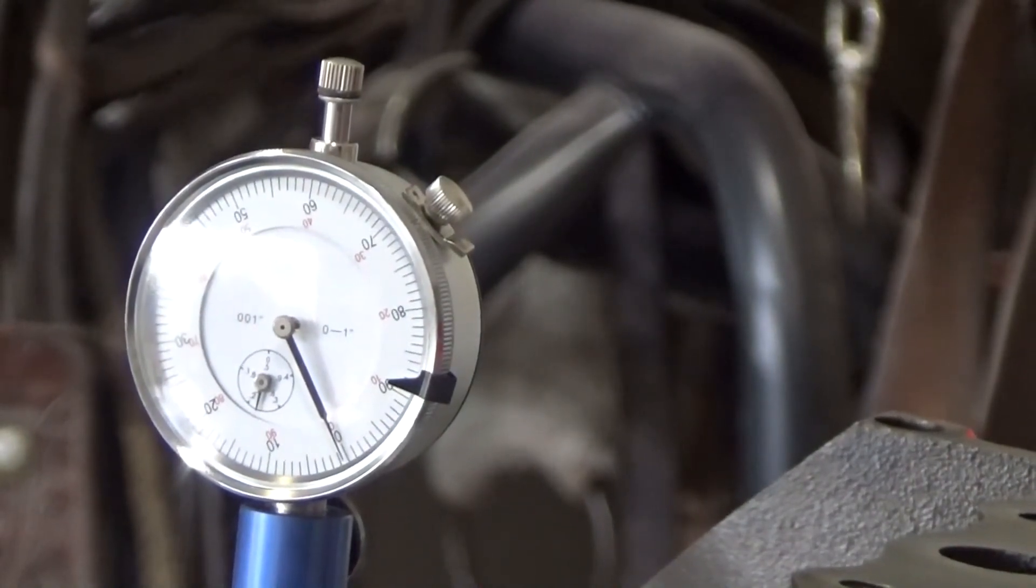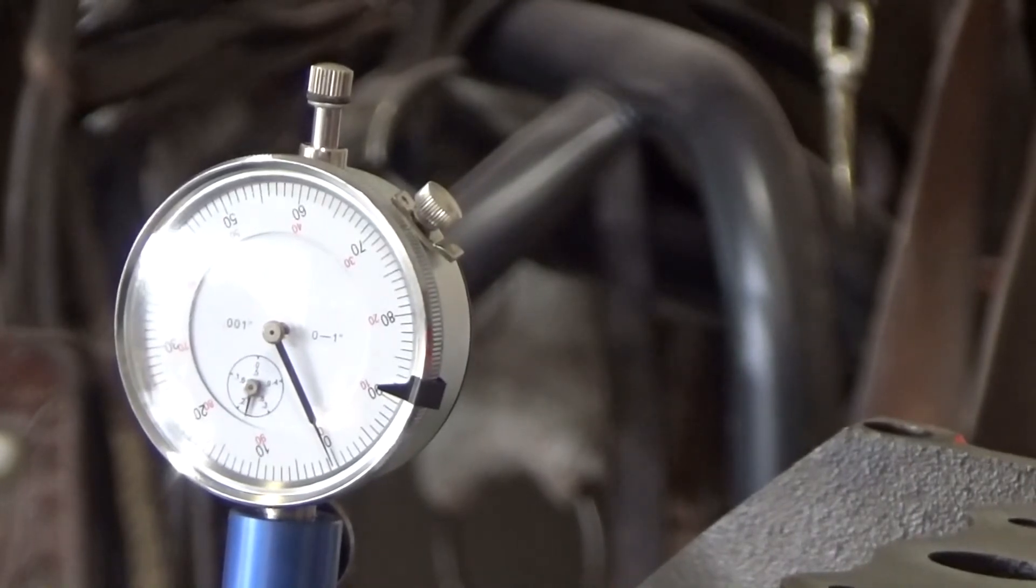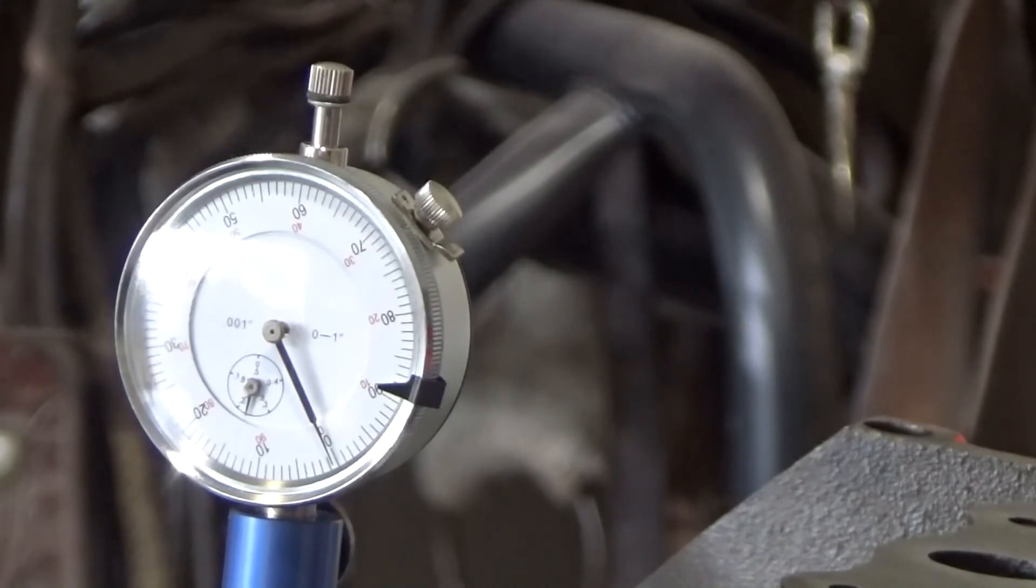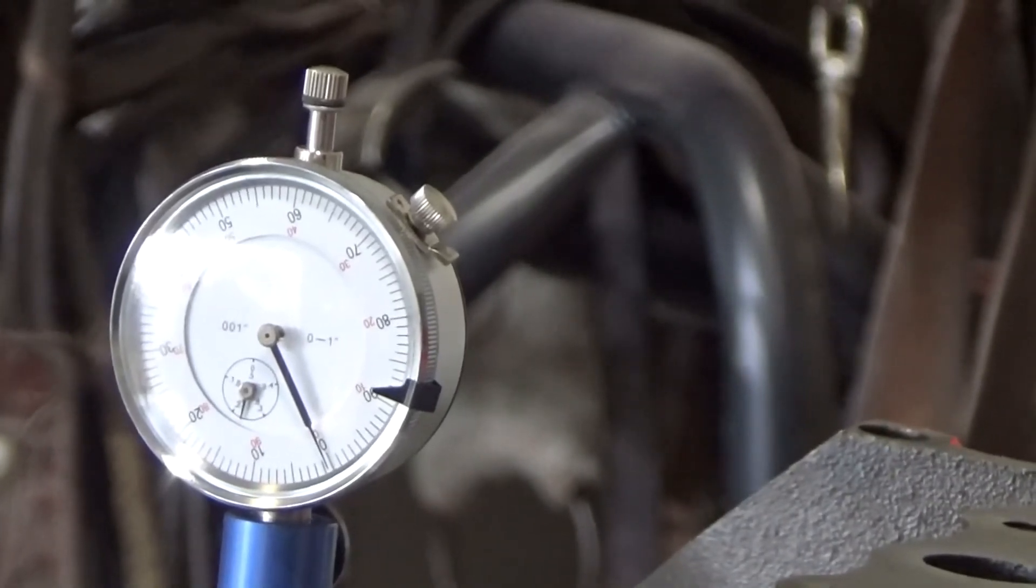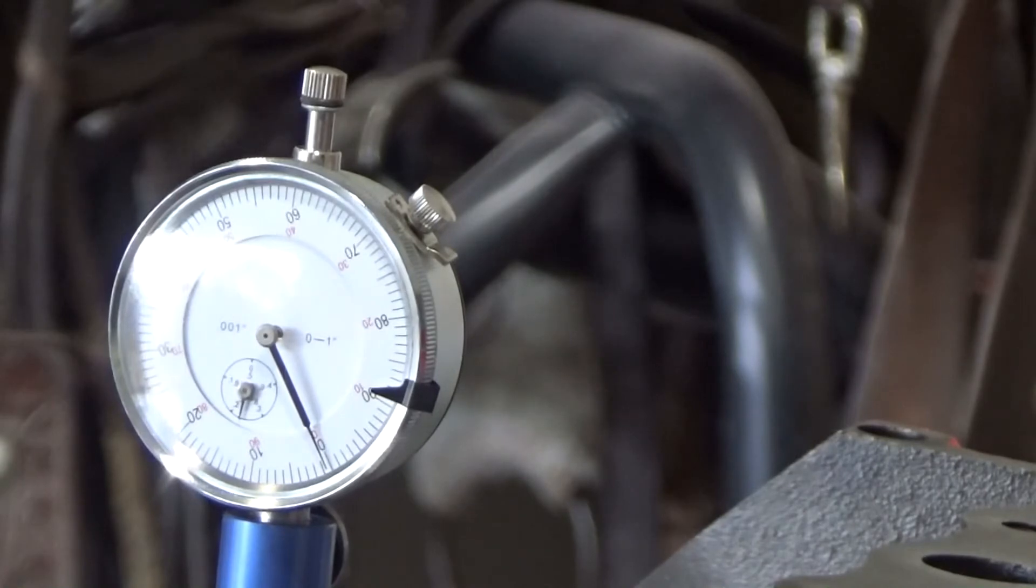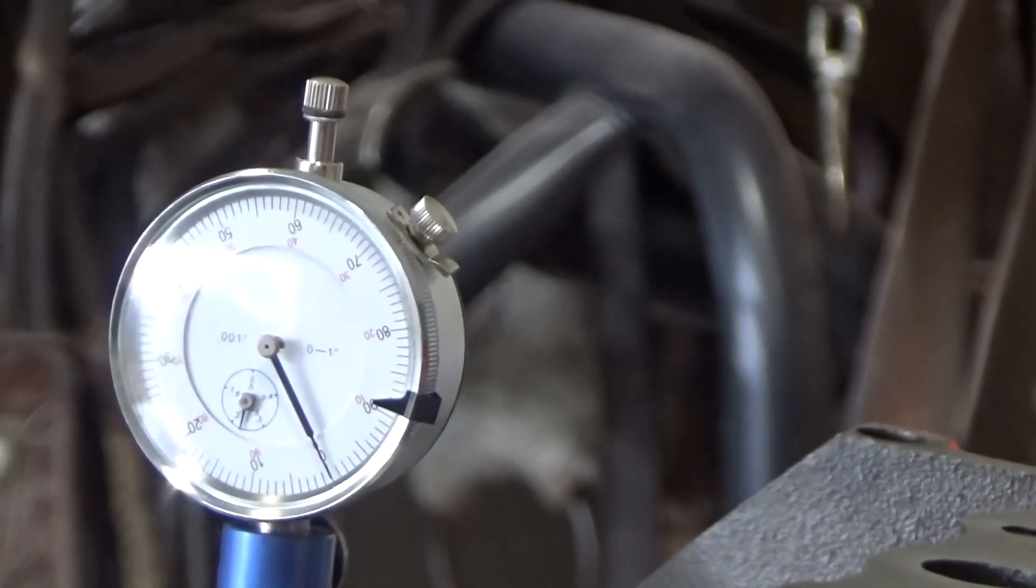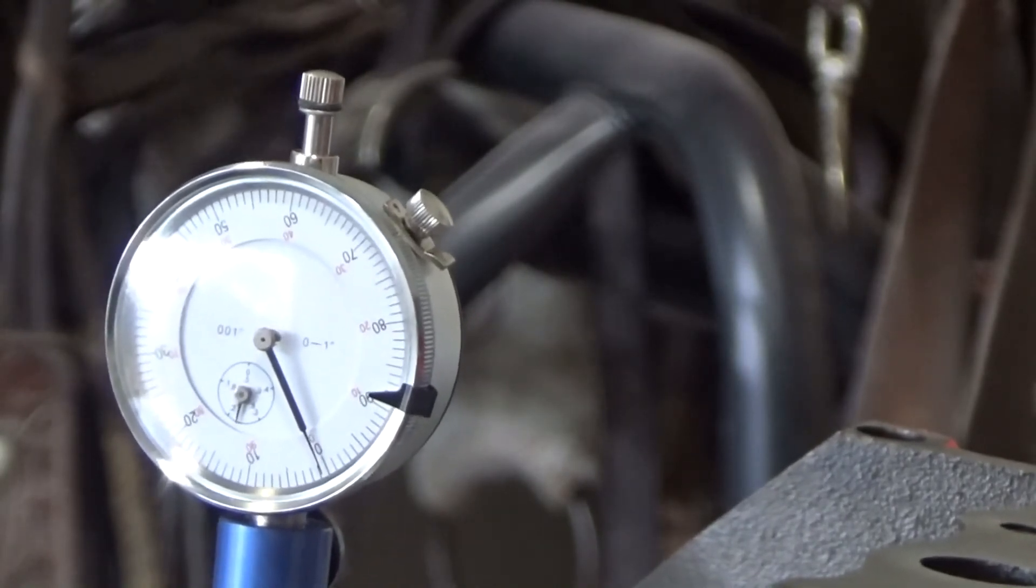I've got my dial indicator in a lifter bore now. It's in the exhaust lifter bore. Hopefully you can see that that is zeroed out. And what I'm going to do is I'm going to rotate this. It's zeroed out because it's on the base circle. It's at a point where it does not move. Now I'm going to rotate it and I'm going to count the revolutions and the thousands of lift. And I'm checking the exhaust lobe lift. I know I'm on the base circle because it's not moving.